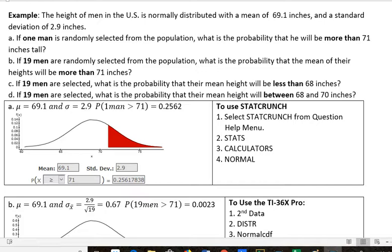So this example, the height of men in the U.S. is normally distributed with a mean of 69.1 inches and a standard deviation of 2.9 inches. If one man is randomly selected from the population, what is the probability that he will be more than 71 inches tall? And part B is if 19 men are randomly selected from the population, what is the probability that the mean of their heights will be more than 71 inches?